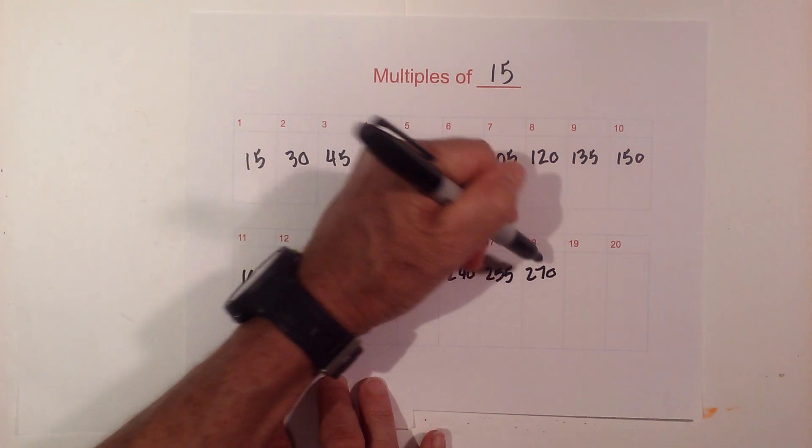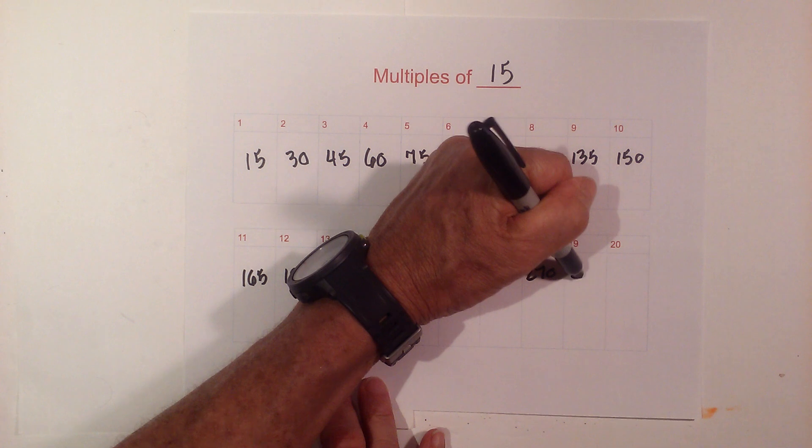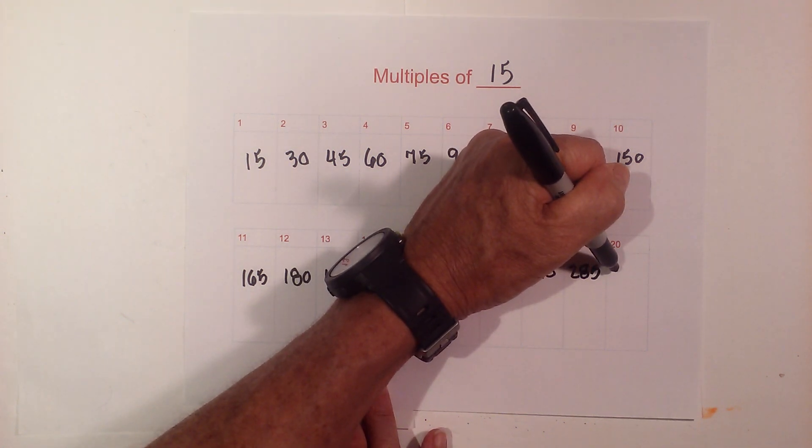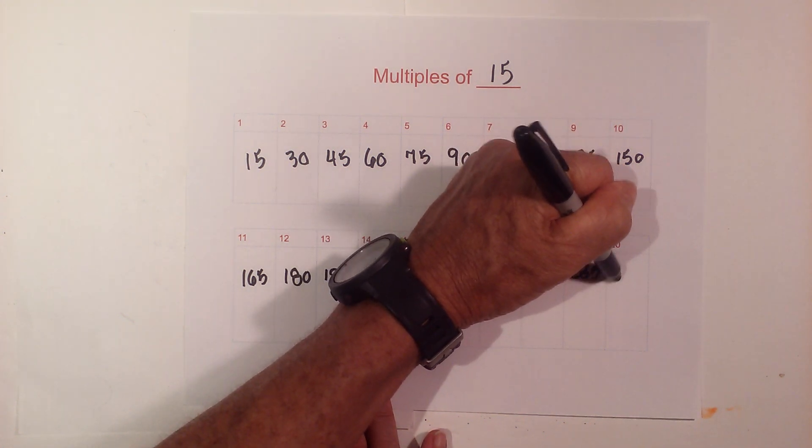255, 270. 15 times 19 is 285. Then 20 times 15 is 300.